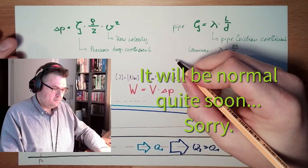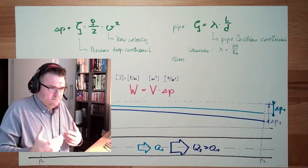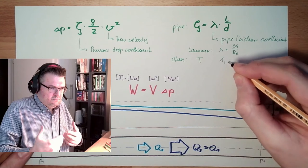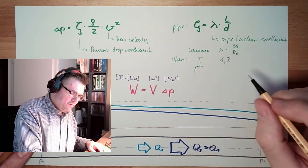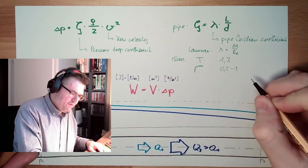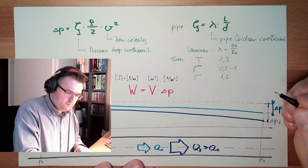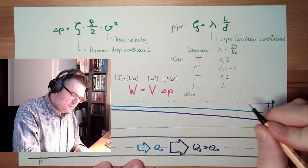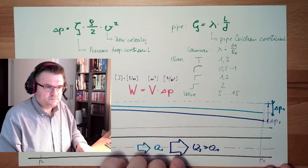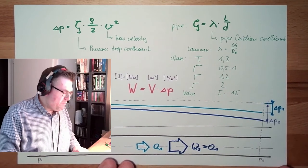So for all other things, this zeta is measured simply. If you have usual values, if you have a t-junction, zeta value is around 1.3. If you have a bend, 90 degree bend, then we are at 0.5 to 1. If you have a sharp 90 degree corner, then we are around 1.2. If we have a double change, we are at 2 somewhere. And valves, we are somewhere between 5 and 15, depending on which type of valve we are using. And these numbers are given by the manufacturer of these items.